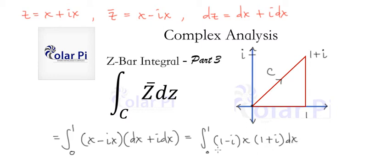Now, since (1 minus i) times (1 plus i) is 2, we can write what we have as 2 times the integral from 0 to 1 of x dx.